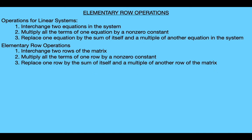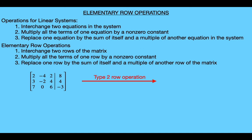Now to see an example of the second type of row operation, let's consider this augmented matrix. In order to make this first term equal to one, we're going to want to multiply all the terms of the first row by one half. So we're going to use the second type of row operation to multiply every term of the first row by one half. When we do that, this two will become a one, this will become a negative two, this will become a one, and this will become a four. So we'll get this new augmented matrix.